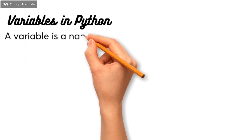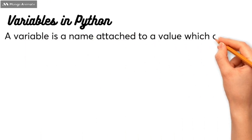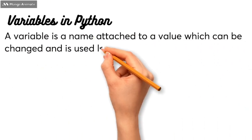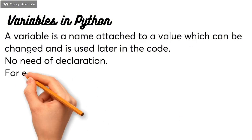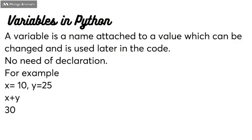A variable is basically a container that stores a value which can be used at any point in the program. For example, if a result needs to be used later, we can store that result in a variable and use it.